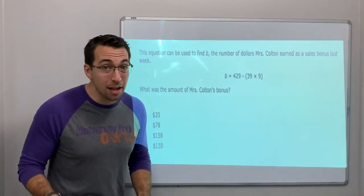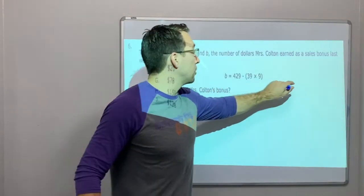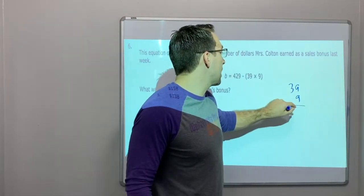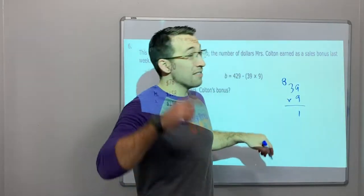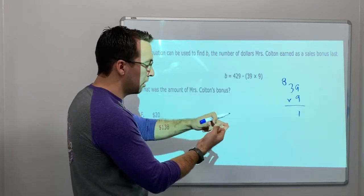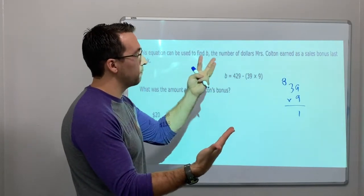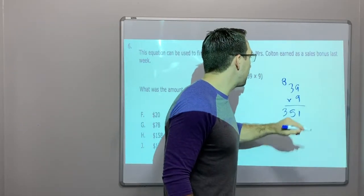Remember PEMDAS, parentheses first. We've got to do the parentheses first. So 39 times 9. 9 times 9 is 81. 9 times 3 is 27 plus 8. So 27, 28, 29, 30, 31, 32, 33, 34, 35. Use your fingers. That's okay. 351.